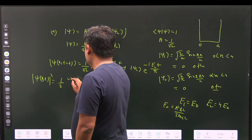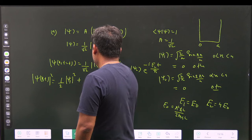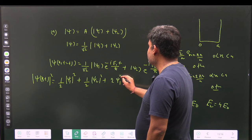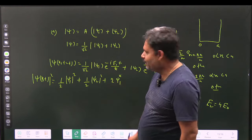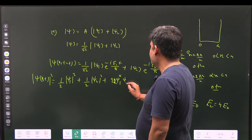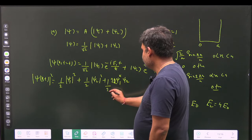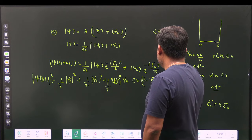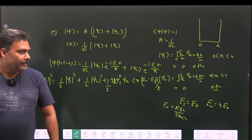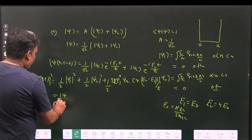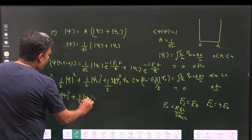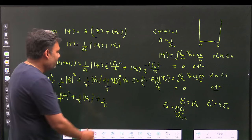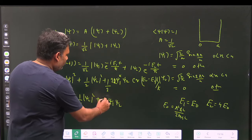Expanding |ψ(x,t)|², we get: (1/2)|ψ₁|² + (1/2)|ψ₂|² + 2 × (1/2) × Re(ψ₁* ψ₂) × cos((E₂−E₁)t/ℏ). Since ψ₁ and ψ₂ are both real functions, we can write ψ₁*ψ₂ simply as ψ₁ψ₂.